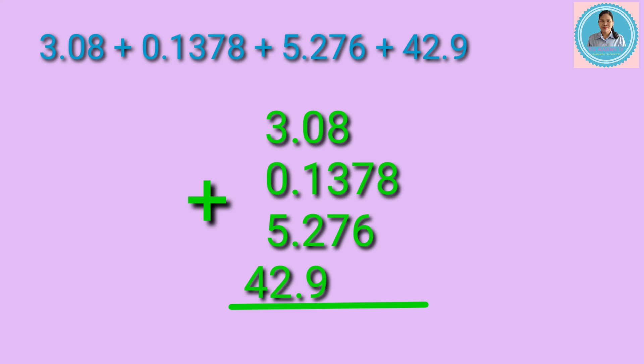Now let's add from right to left. Since there is only one digit in the ten-thousandths place, let's bring down 8. Next, add 7 plus 6 equals 13 — bring down 3, carry 1. Next, 1 plus 8 plus 3 plus 7 equals 19 — bring down 9, carry 1.